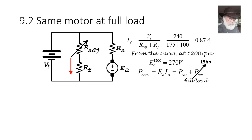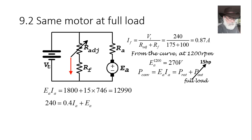The rated output power is 15 horsepower multiplied by 746 watts per horsepower — the agreed conversion factor used in electrical machines by industry standard. The total converted power is 12,990 watts. Solving the same two-equation system again yields two possibilities: 24 volts and 216 volts. Following our rule, we choose 216 volts — notably different from 270 V because the speed has changed.